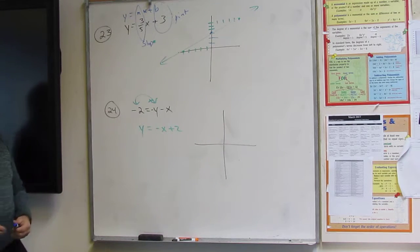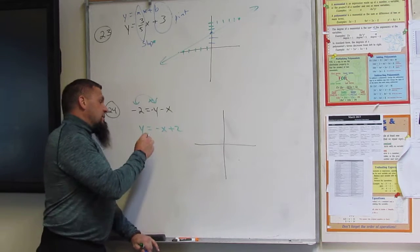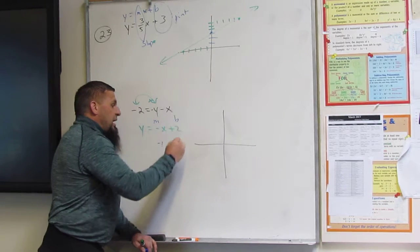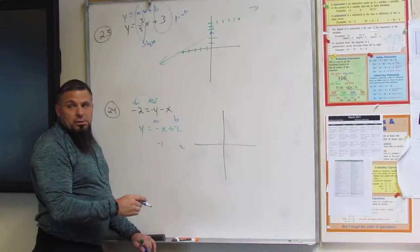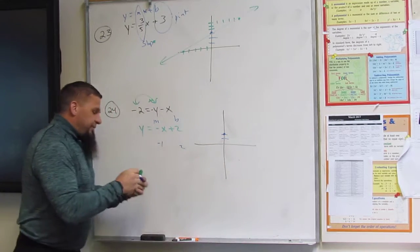Is that 124? Yeah. Okay. And so with this, m is negative one. b is two. So my starting point is one, two, negative one.